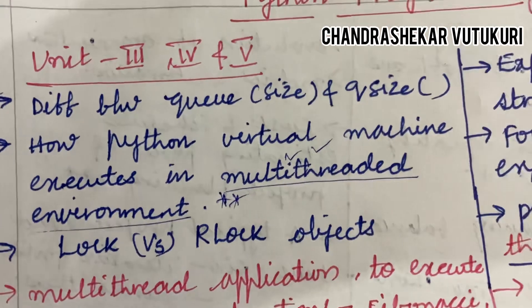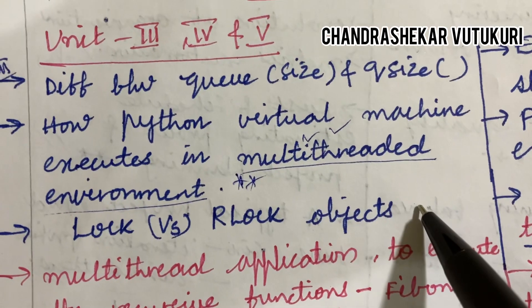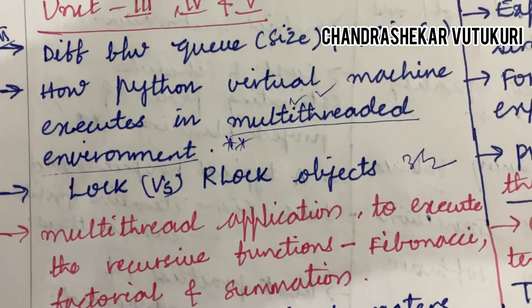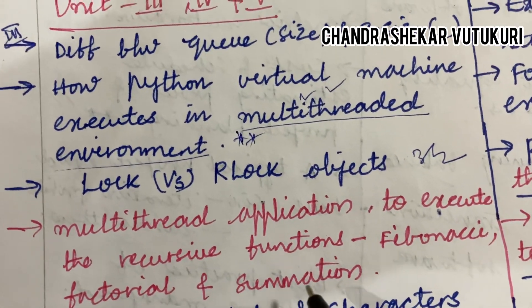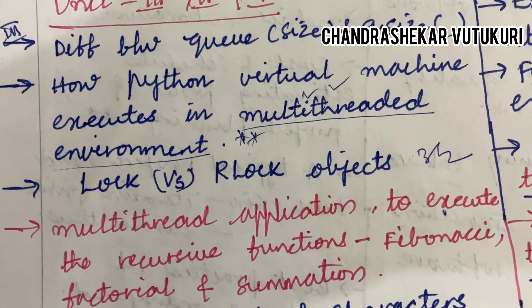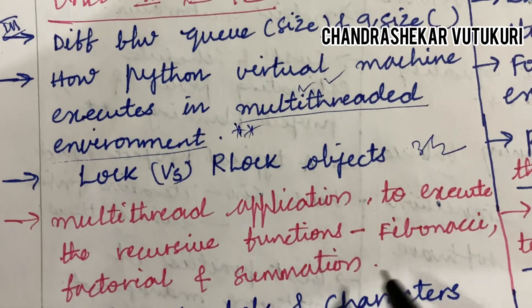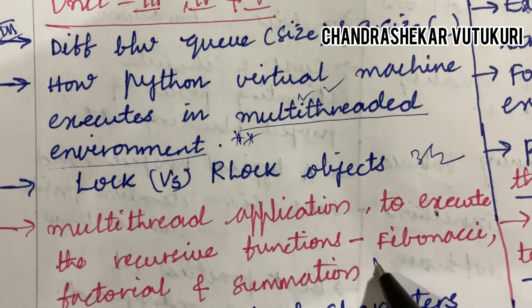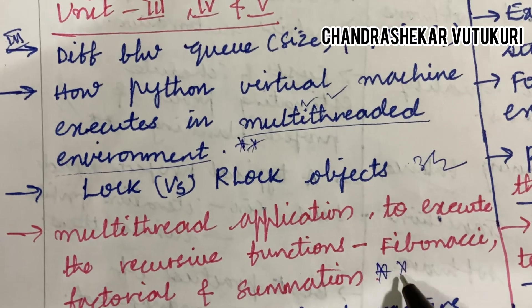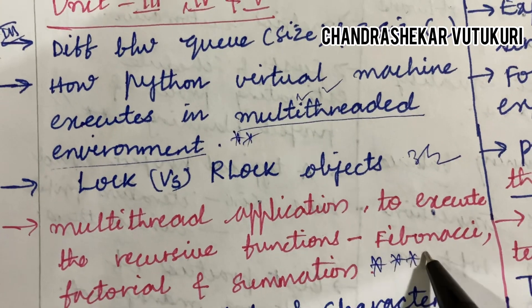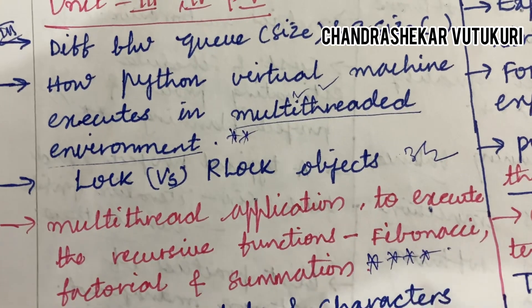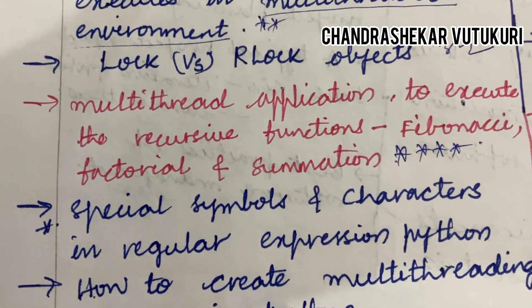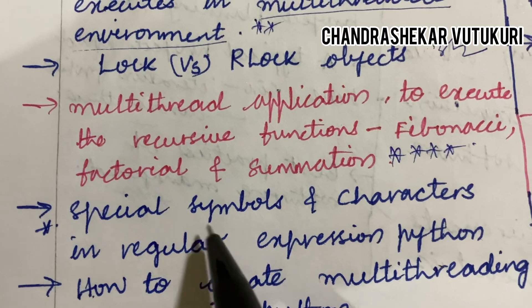Lock versus RLock objects may be a 3-mark or 2-mark question, and multi-thread application to execute recursive functions — Fibonacci, factorial, and summation related to multi-thread application. You may be getting such type of questions for sure this time in the question paper.